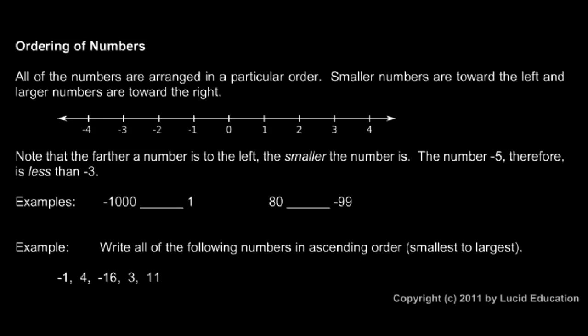And this can be a little bit confusing with negative numbers. The number negative five, for example, which is about right here on the number line, is less than the number negative three. You see negative five is to the left of negative three, so that makes it less than negative three.